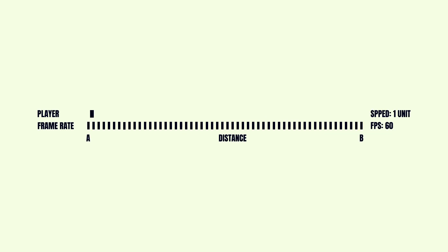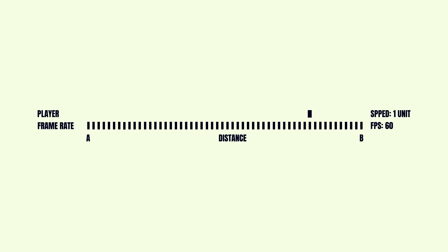Before we can understand how FixedUpdate works, we need to understand how objects traverse an area. In video games, objects move by frame rate. If we set object speed to 1 unit, the object will move at 1 unit per frame. If our game frame rate is 60 frames per second, then in 1 second we will move 60 units.